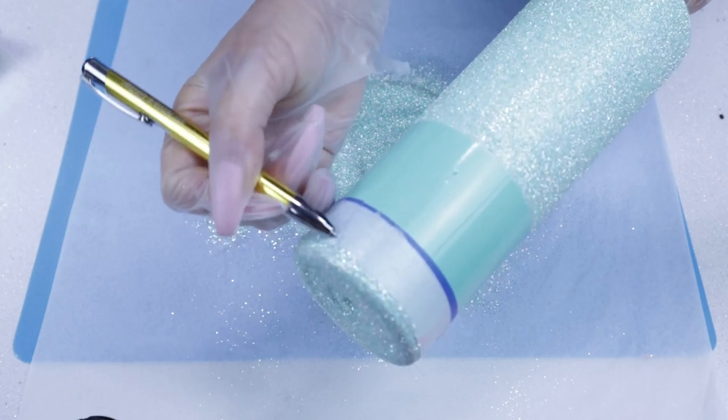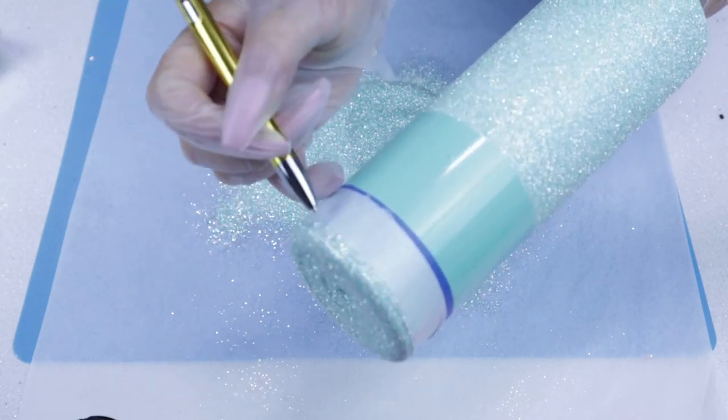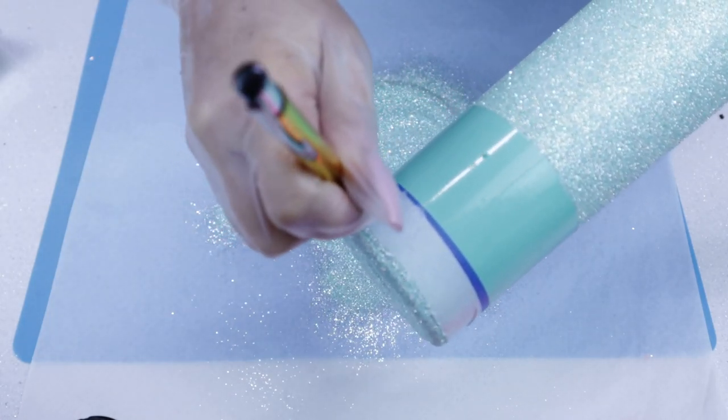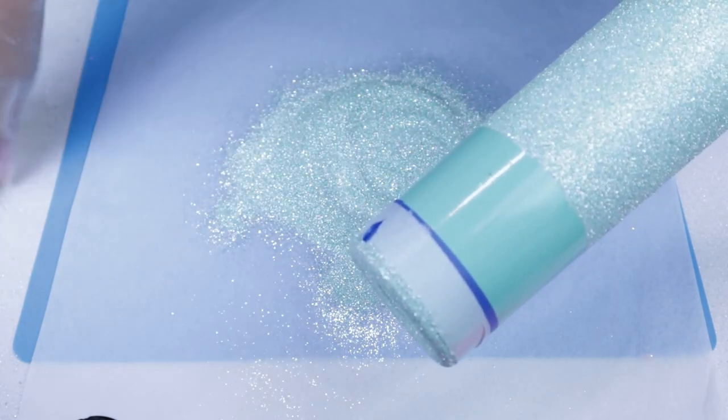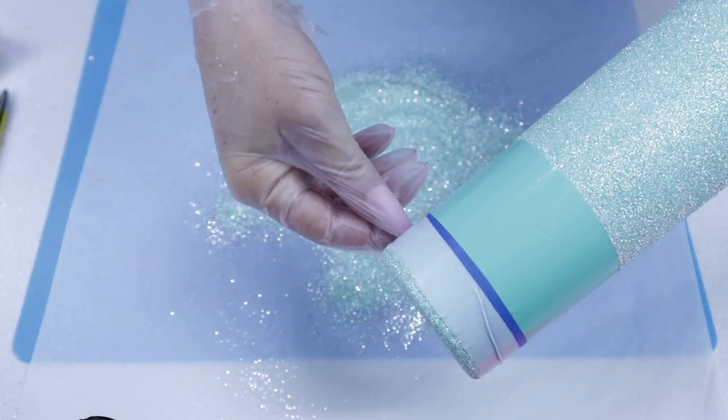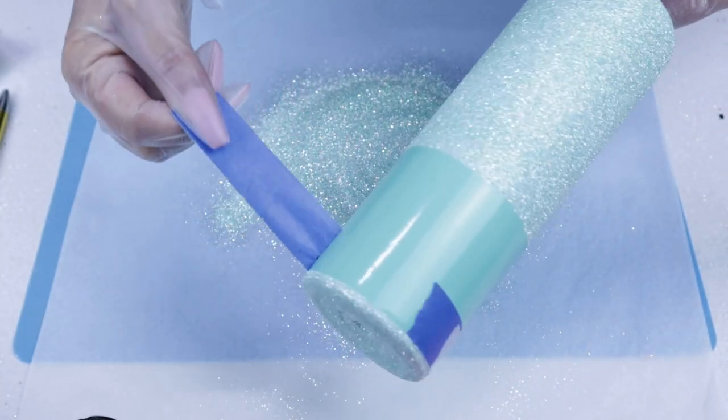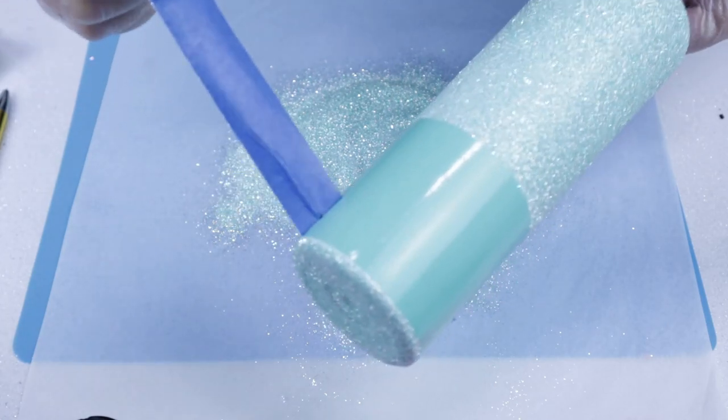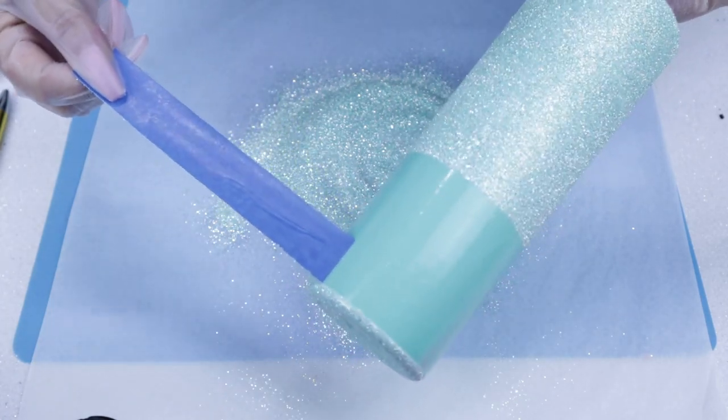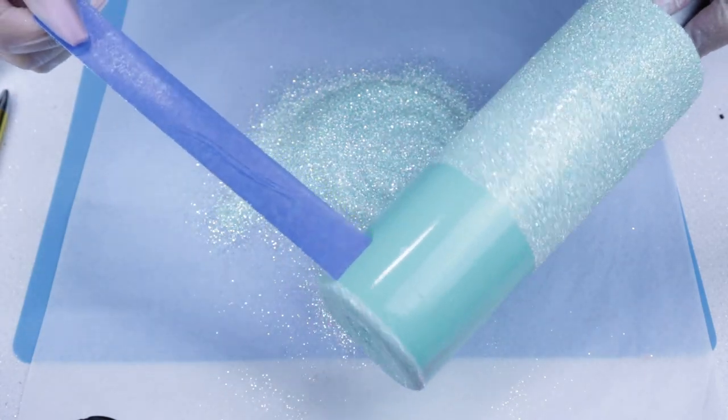As you can see right here in the clip, I actually missed an air pocket, so I made sure to get that air pocket before I applied the epoxy. At this point, I'm very satisfied with how my glitter meets my vinyl.